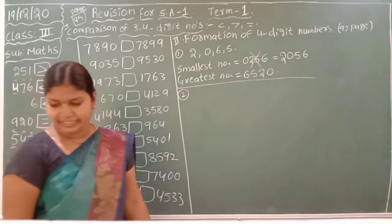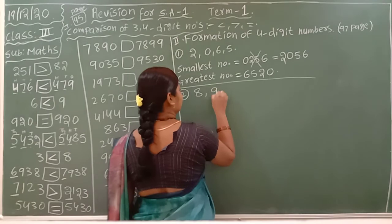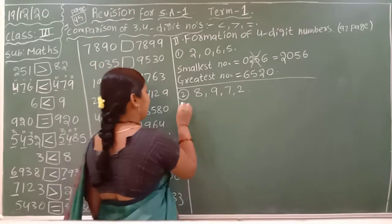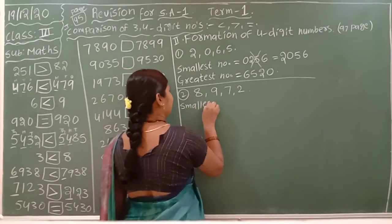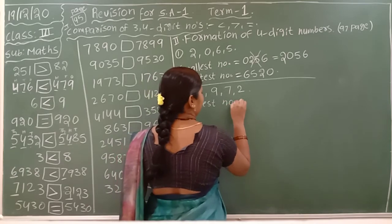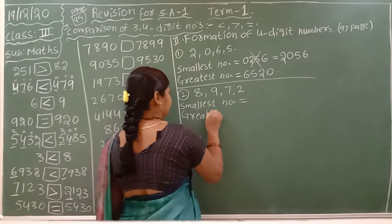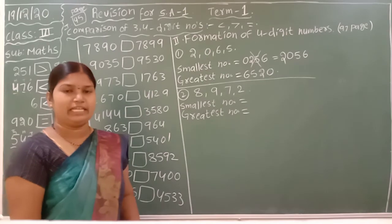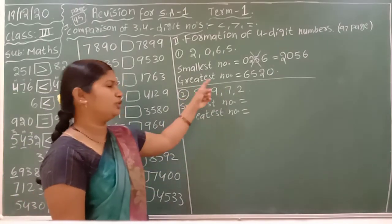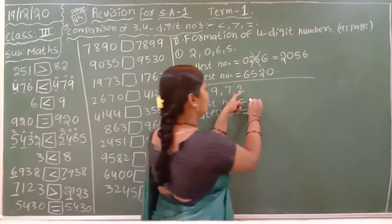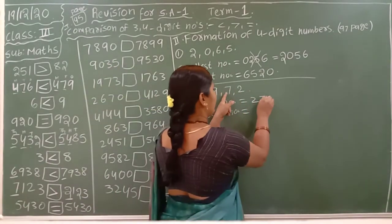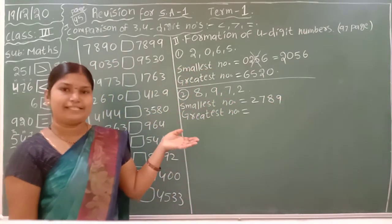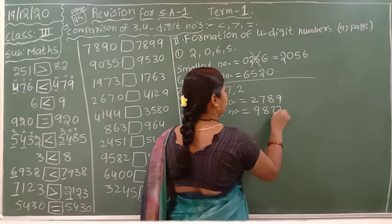Second question: digits are 8, 9, 7, 2. Using these numbers write down the smallest number and greatest number. Smallest number means think of it like ascending order — write small to big. Out of these 4 digits, the smallest is 2. Write 2, then 7, then 8, then 9. Greatest number is like descending order: 9, 8, 7, 2.